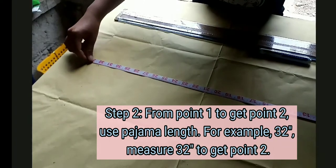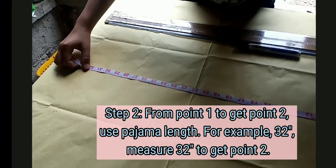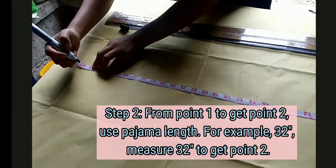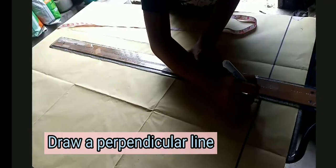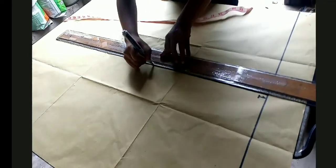To get point 2, use the pajama length. The pajama length measures 32 inches. Measure it to get point 2. Draw a perpendicular line.